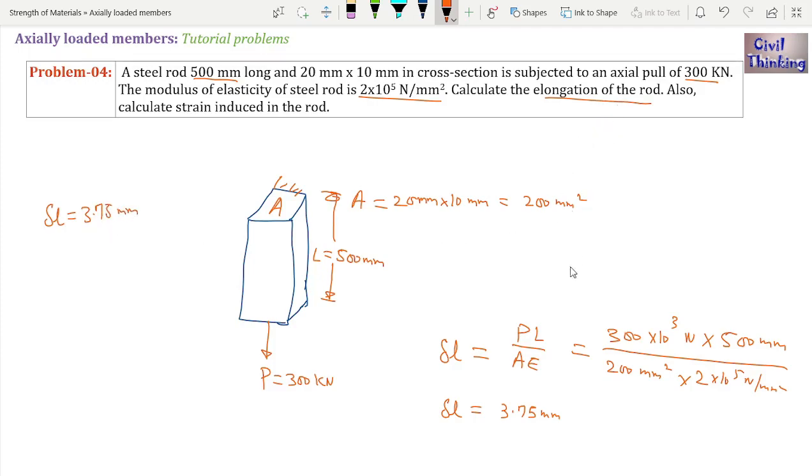Now there is a second question: calculate the strain induced in the rod. Let epsilon be the strain. Now strain is change in length which is delta L divided by original length which is L, right? Now change in length is 3.75 millimeters divided by original length is 500 mm.